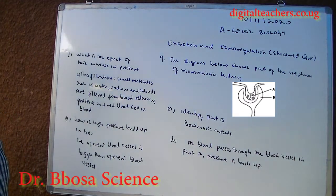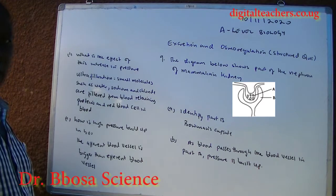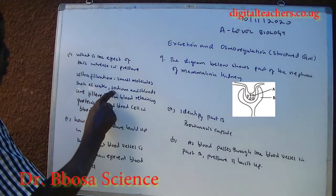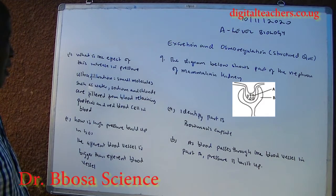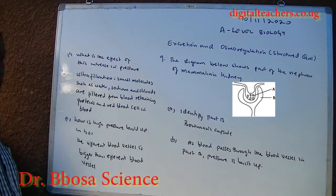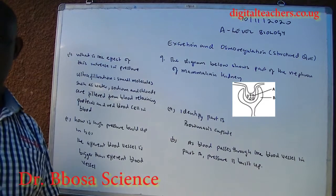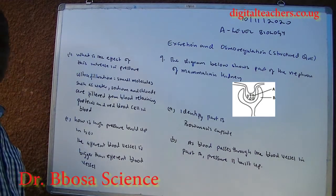In part A, pressure is built up in the vessel. The effect of increasing pressure is that it causes ultrafiltration — small molecules such as water and sodium chloride are filtered from blood, retaining proteins and red blood cells. The high pressure is maintained because the afferent blood vessel is bigger than the efferent blood vessel; when the size of the blood vessel reduces, the pressure increases.